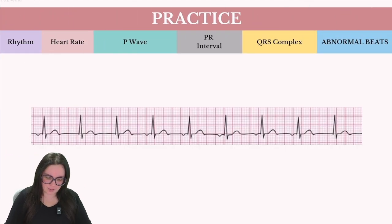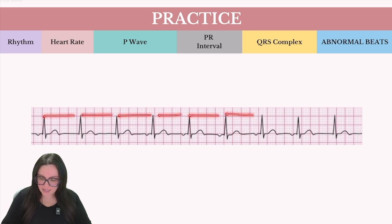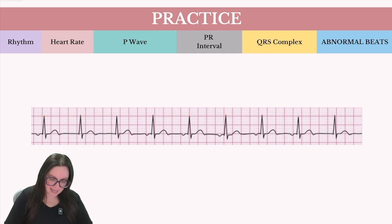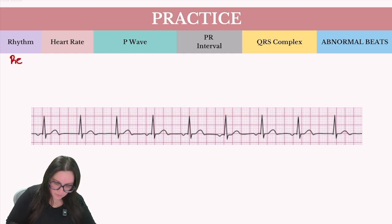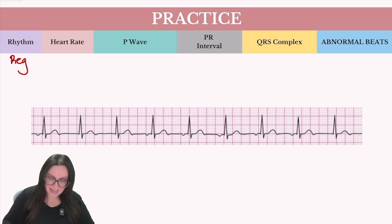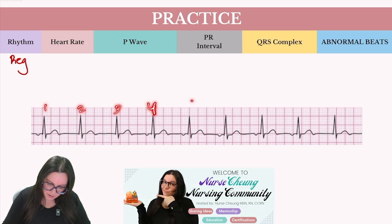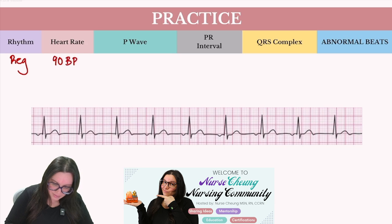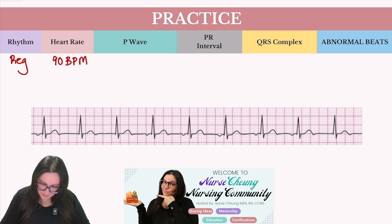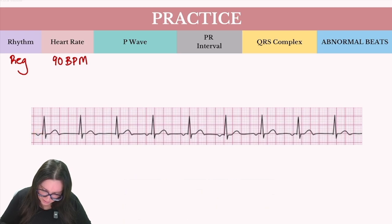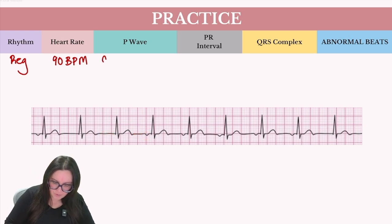Let's take a look at our next practice example. Again, we start with rhythm — do we have a regular or irregular rhythm? Based on what I can see, everything is falling in the exact same place when measured, so we would call this rhythm regular. Next, we want to count our QRS complexes — I have approximately nine, giving us about 90 beats per minute. Then I want to take a look at my P waves. It looks like I actually have maybe a little bit of an inversion here, then no P wave, and then another inversion. So the P waves are variable — we have both absent and inverted P waves.